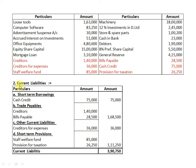Our second requirement is Current Liabilities. By observing the financial data, we get Creditors, Creditors for Expenses, Staff Welfare Fund, Bills Payable, Cash Credit, and Provision for Taxes, which belong to Current Liabilities. Now let us classify all these items into suitable subheads. For Current Liabilities, our first subhead is Short Term Borrowings, and from this data we have Cash Credit as a Short Term Borrowing of Rs.75,000.